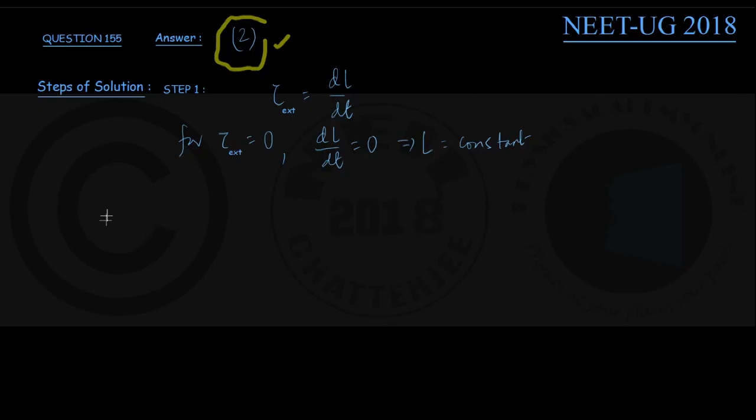Well, angular momentum L is given by the formula I into omega. For rotation about an axis passing through the center of mass, I_CM, moment of inertia about center of mass, into omega, that is angular velocity. Now for a solid sphere, moment of inertia about center of mass is given by 2/5 MR². M being the mass, R being the radius. Now in the question they are telling for the sphere mass remains same, radius is increased.